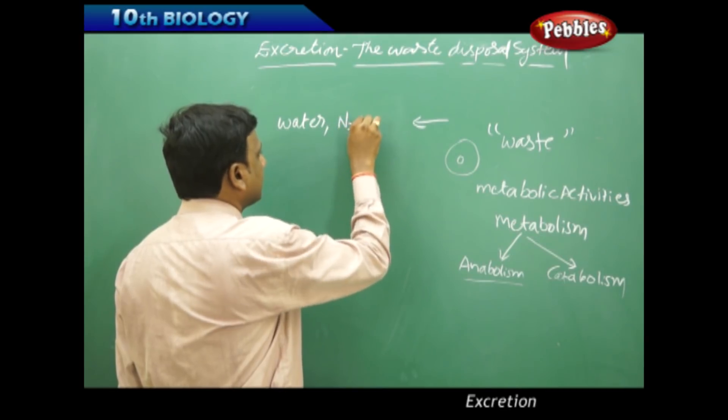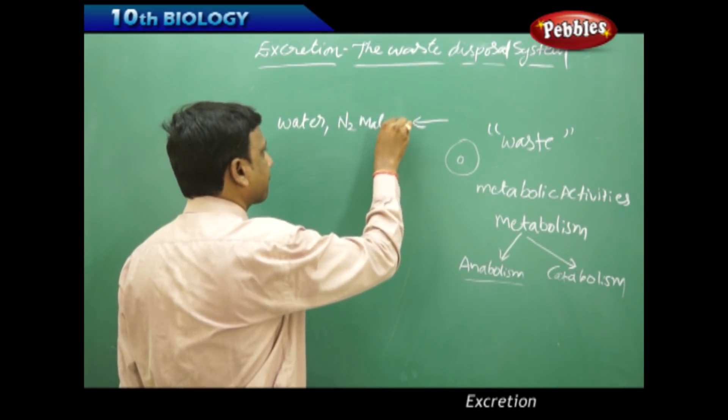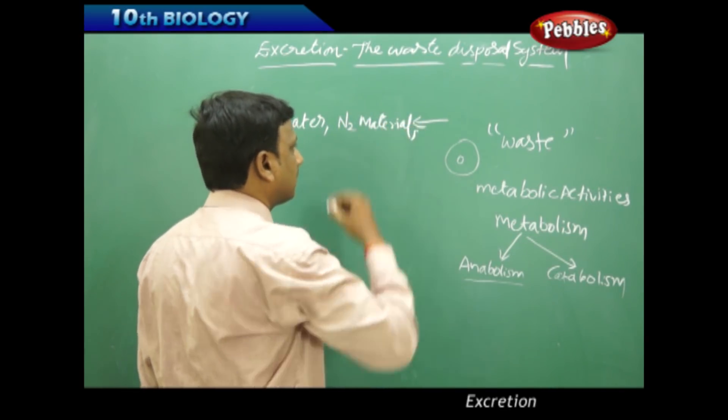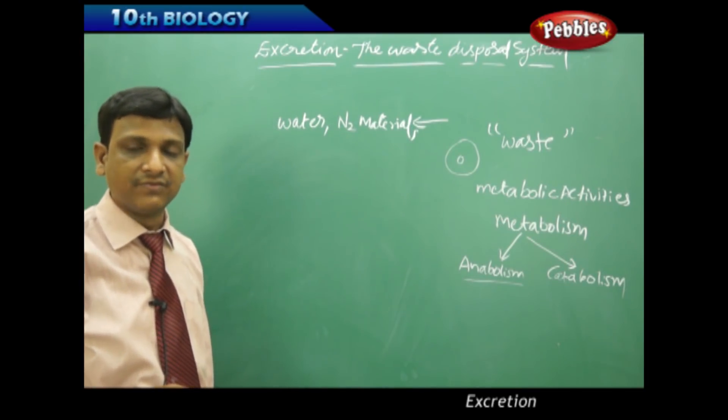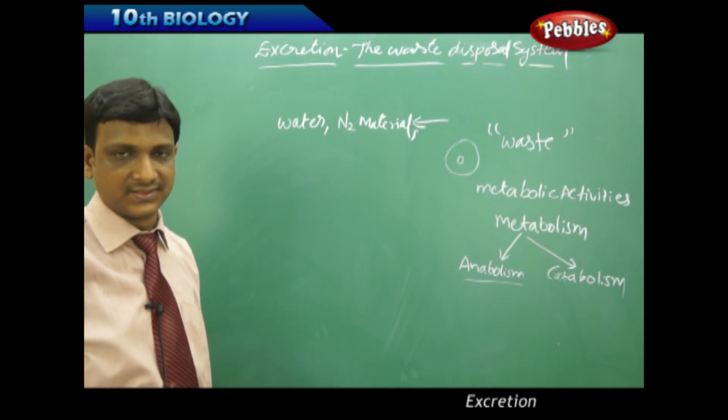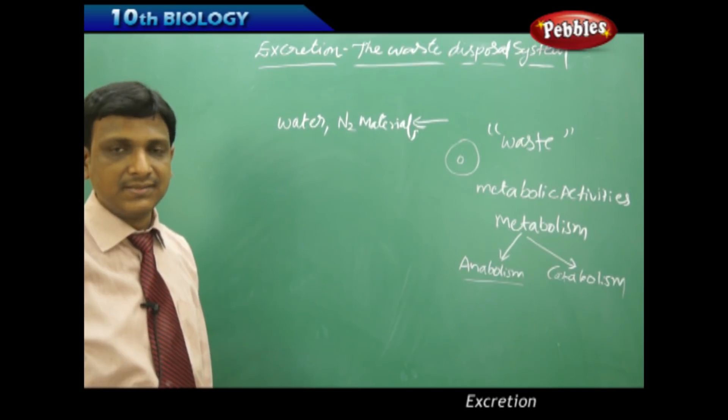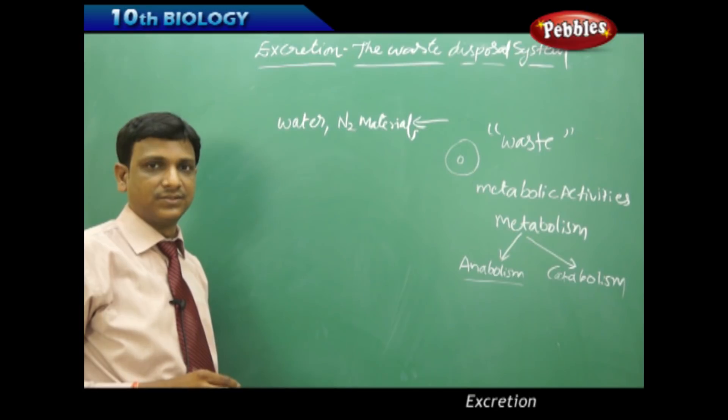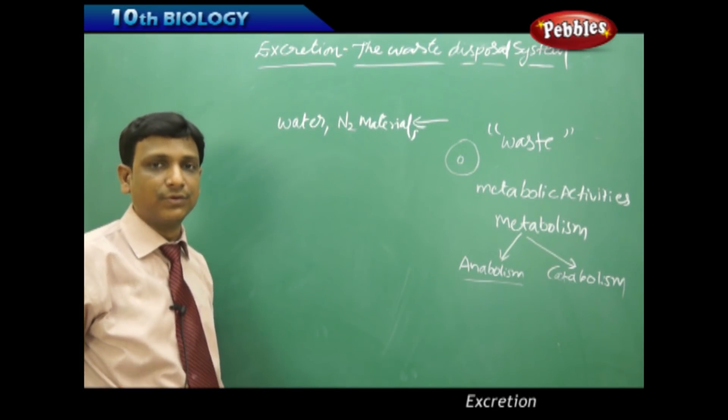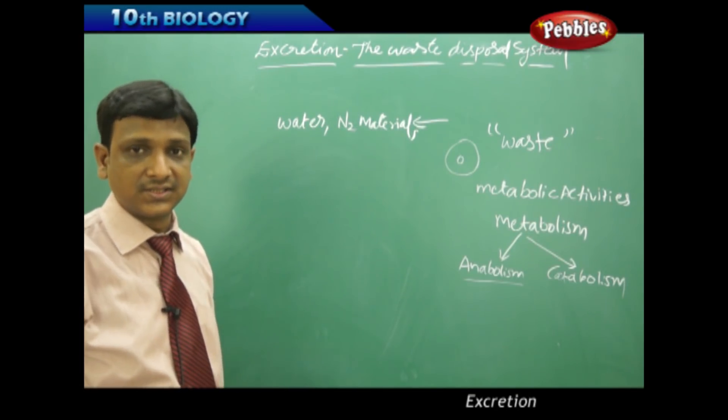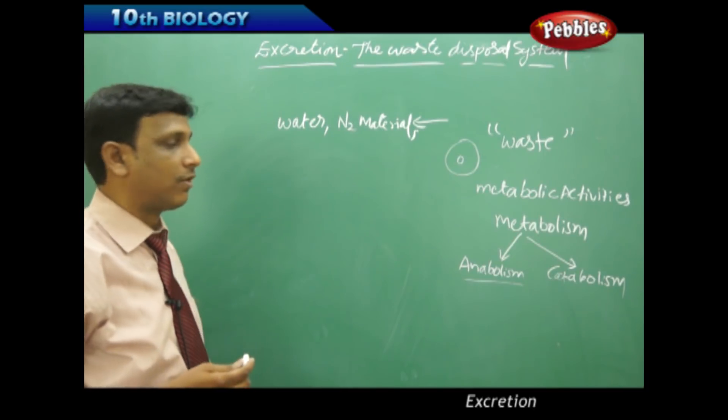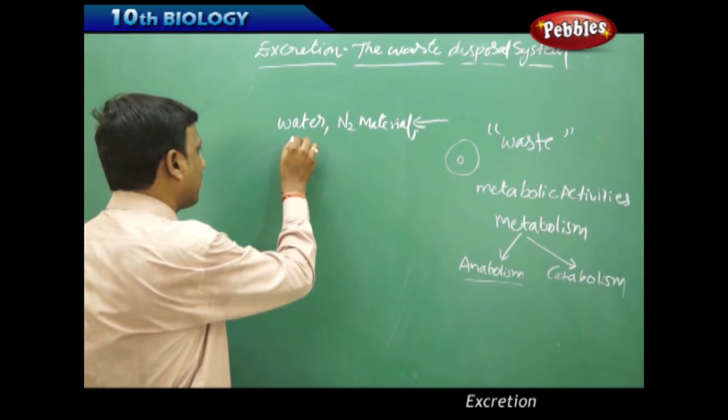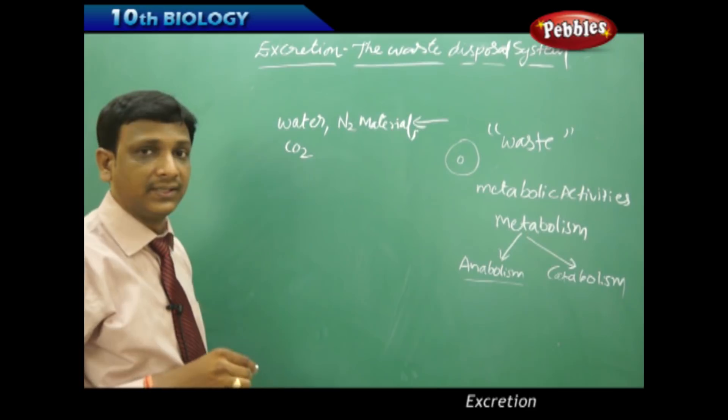Extra water should be removed out of the body. And more importantly, nitrogenous materials. Nitrogenous substances that are produced in the bodies are very toxic, poisonous, especially ammonia, urea, uric acid, creatinine. These kind of nitrogenous compounds are produced in our bodies during the process of utilization of food, breakdown of proteins.